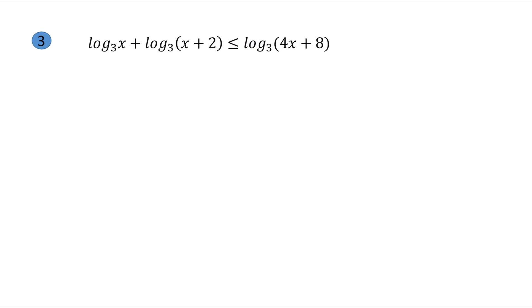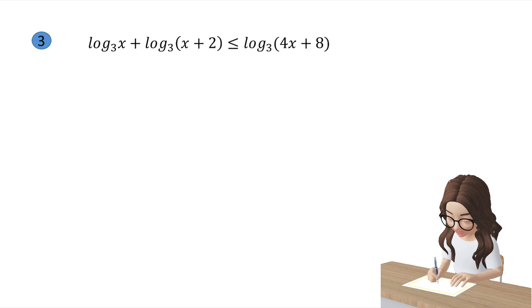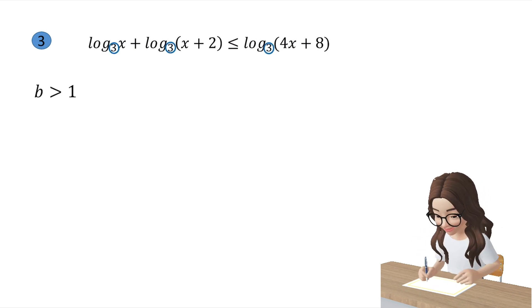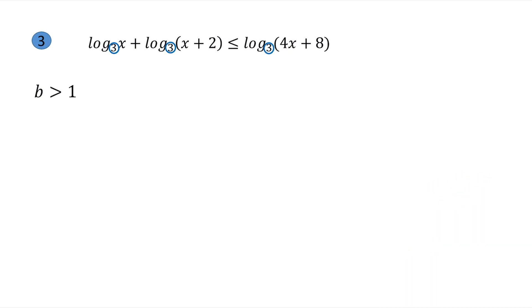Let us proceed to example number 3. We have: log₃(x) + log₃(x+2) ≤ log₃(4x+8). First, identify the base: 3 is greater than 1, so the inequality symbol remains. Apply the logarithm product rule on the left side: it simplifies to log₃[x·(x+2)] ≤ log₃(4x+8).